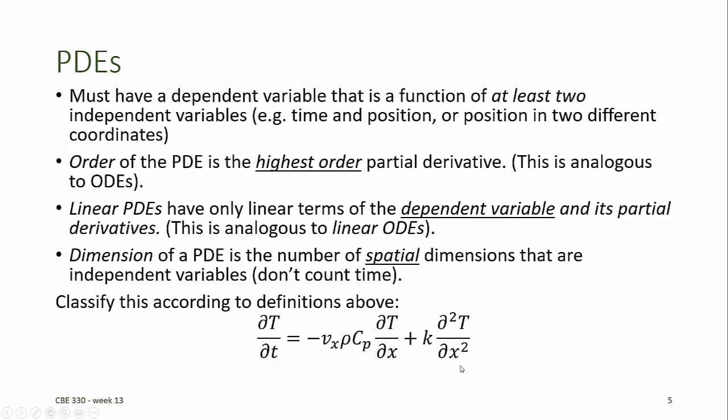The order of this PDE is 2, because this has a second derivative with respect to position. This PDE represents a linear combination of derivatives of T, and is therefore a linear PDE. The dimension, remember, is the number of spatial dimensions, so we don't count time. And this PDE has only one dimension. x is the only independent spatial coordinate.